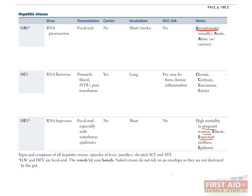Hepatitis C is mainly acquired through IV drug use or blood products such as transfusions. It can be sexually transmitted, but not as easily as hepatitis B. Persistent hepatitis C infections may progress to chronic hepatitis, cirrhosis, and hepatocellular carcinoma.